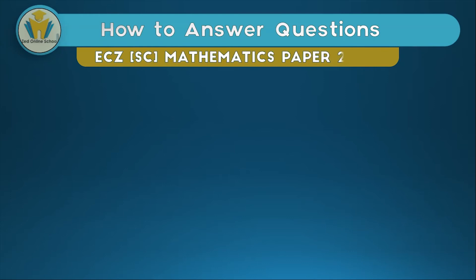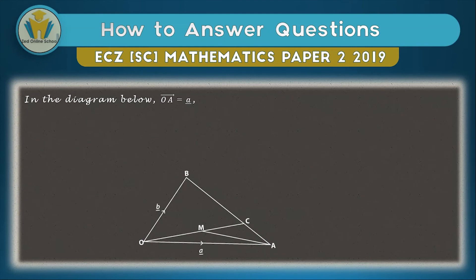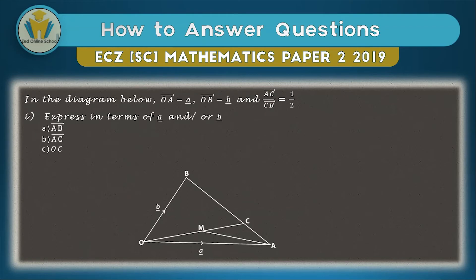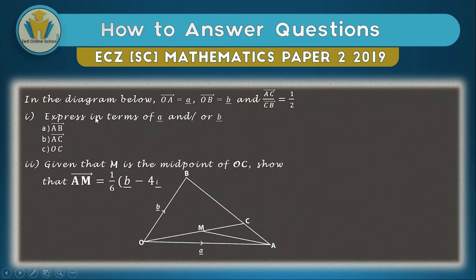That's how we answer a simple question involving vector diagrams. Now let's look at a second, more tricky question. Pause the video right now and solve part one on your own, then check if your answers match the ones given. In this question: OA equals a, OB equals b, and AC to CB equals 1 to 2.